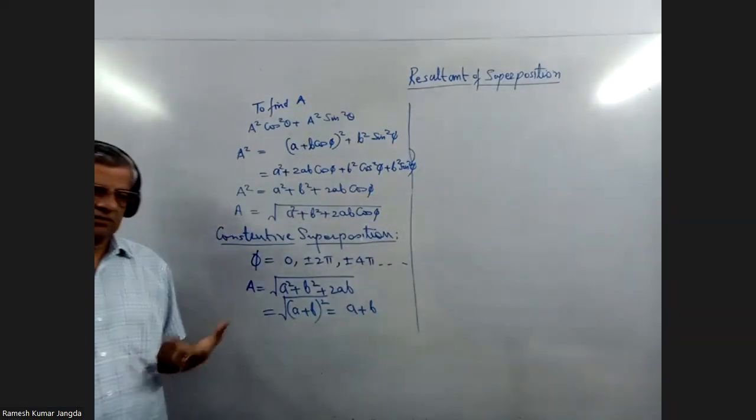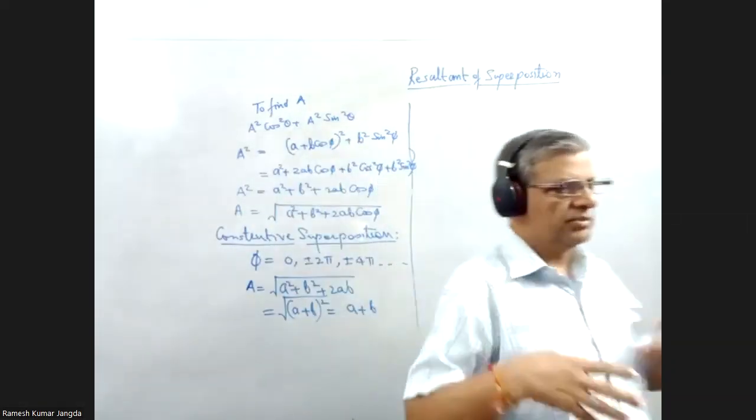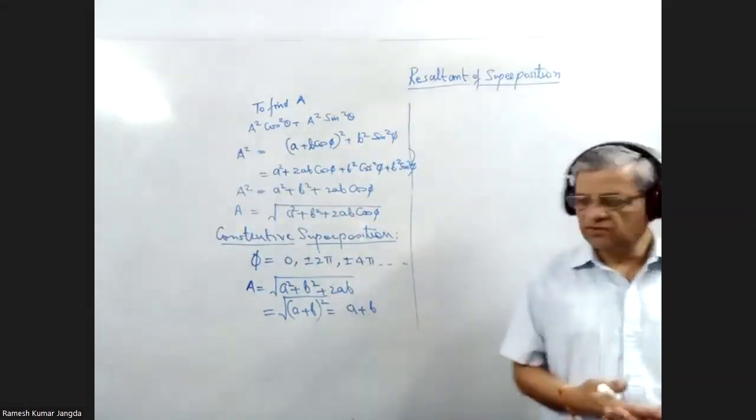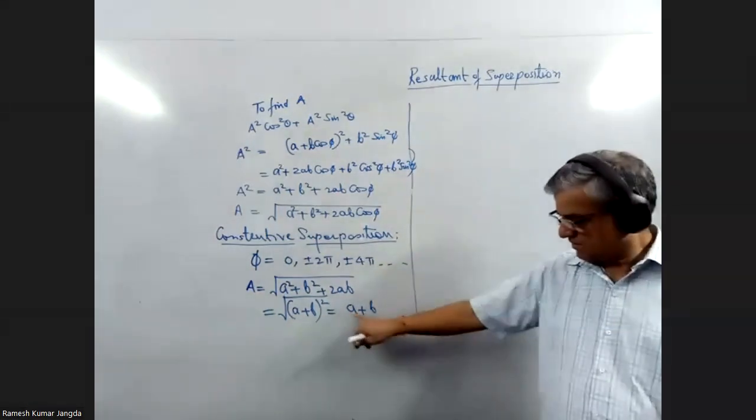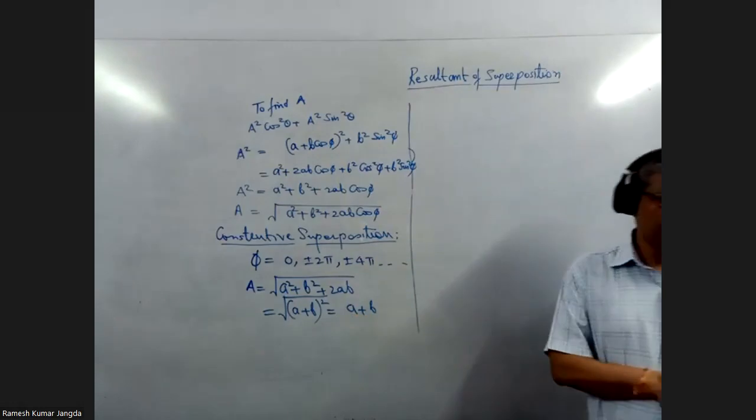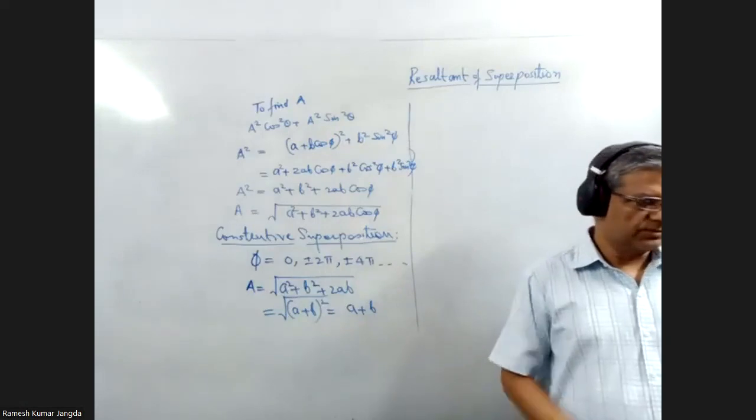So when the two waves are meeting constructively, or when the two waves are meeting in phase, they will always result in the resultant amplitude of a plus b. And if a and b both are same, then this will become 2A.